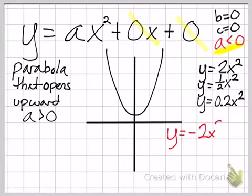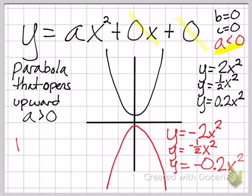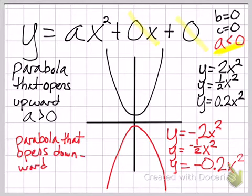Likewise, if a were less than zero, so you have a bunch of negative numbers in front of the x squared, that parabola would open downward. Very logical. So, two basic concepts. When a is greater than zero, it opens up. When a is less than zero, it opens down. And a is the coefficient in front of the x squared term.